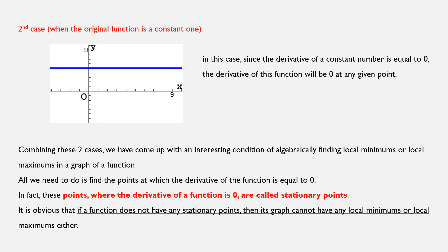To combine these two cases we just mentioned, we can come up with an interesting condition of algebraically finding local minimums or local maximums on a graph of a function. All we need to do is find the points at which the derivative of the initial function is equal to 0. In fact, these points where the derivative of a function is equal to 0 are called stationary points. Once again, stationary points of a graph are the points on that graph where the derivative of the function is equal to 0. It is quite obvious that if a function does not have any stationary points, if we cannot find any points where f' is equal to 0, then the graph cannot have any local minimums or local maximums either.